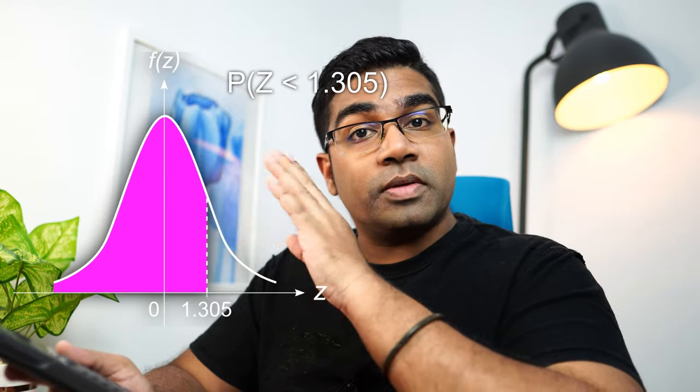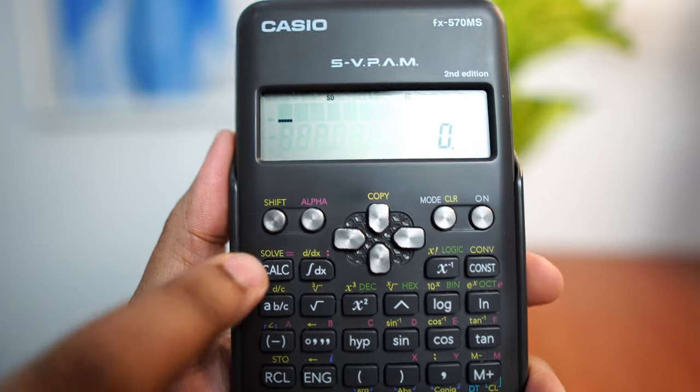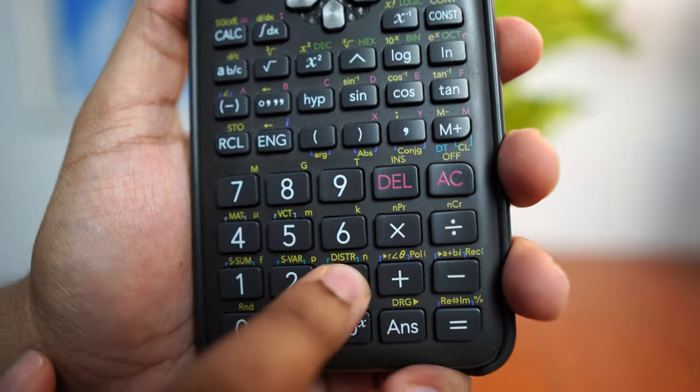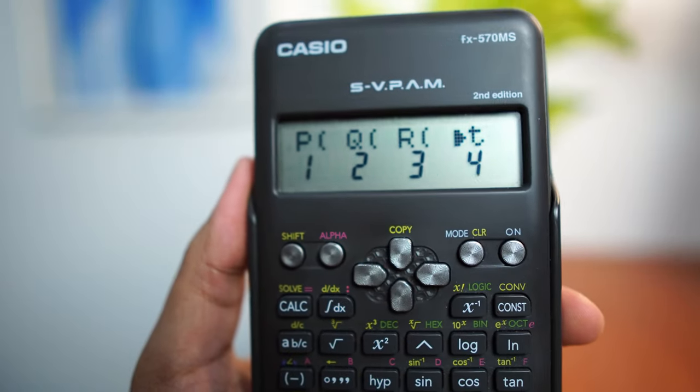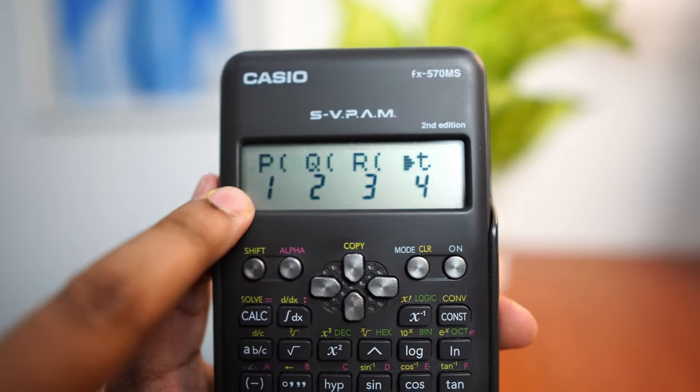Let's say you wanted to find this area, the pink area here. This is the lower tail probability of a standard normal distribution graph. For lower tail probability, go to shift and press number 3. You can see DISTR and choose P. In this case, I would press number 1.